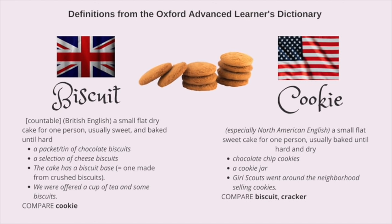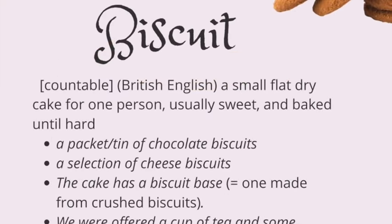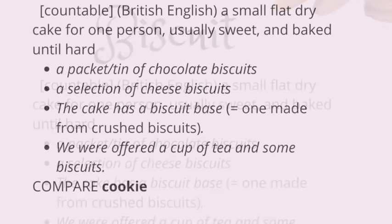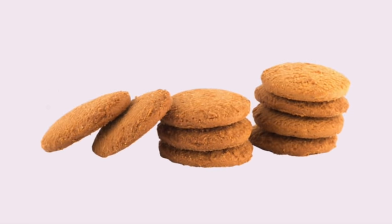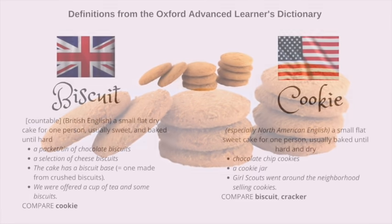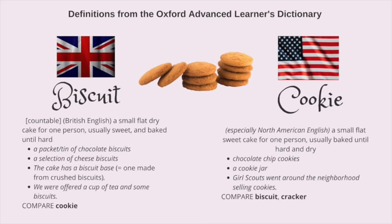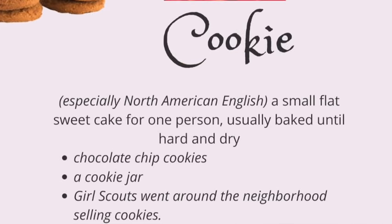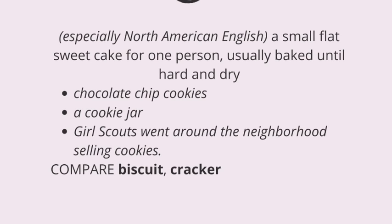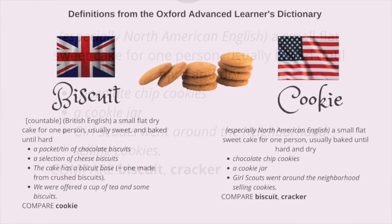First let me tell you the definition according to the Oxford Advanced Learner's Dictionary of these two words. Biscuit is, in British English, a small flat dry cake for one person, usually sweet and baked until hard. Compare with cookie. Now, the definition of cookie is, in North American English, a small flat sweet cake for one person, usually baked until hard and dry. Compare with biscuit and cracker.